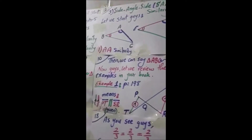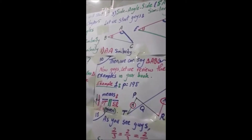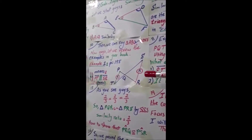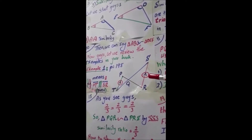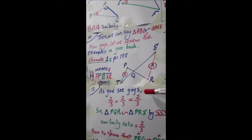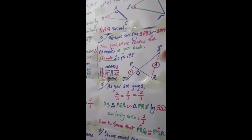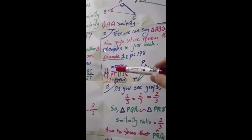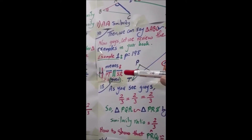Let me go to example one on page 198. Look at this shape. First of all, if you see in any example or exercise this symbol — like a small tick mark — that means these two sides are parallel. I circled them on RS and PT. It means that PT and SR are parallel. This is very important.